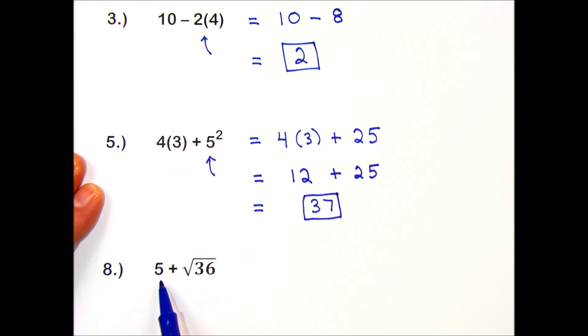So I have 5 plus the result of the square root of 36, which is 6. And then I perform my addition. 5 plus 6 is 11.